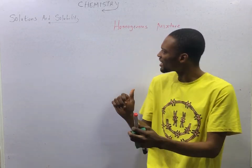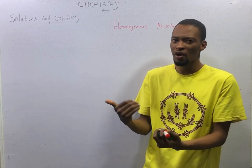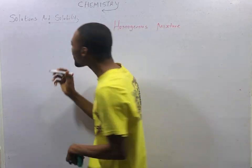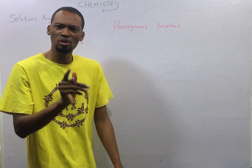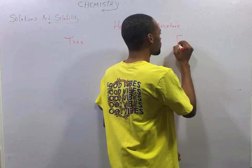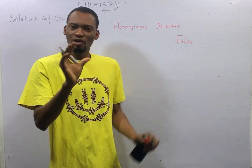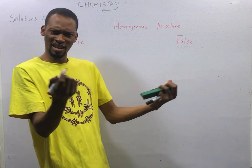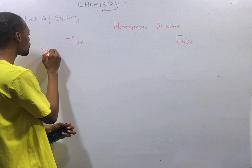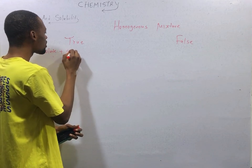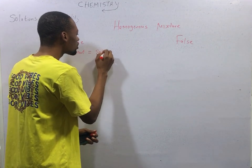The definition that a solution is a homogeneous mixture of two or more substances refers to a true solution, because a solution can be false. A true solution contains solute and solvent. Therefore, for a true solution: solute plus solvent equals solution.